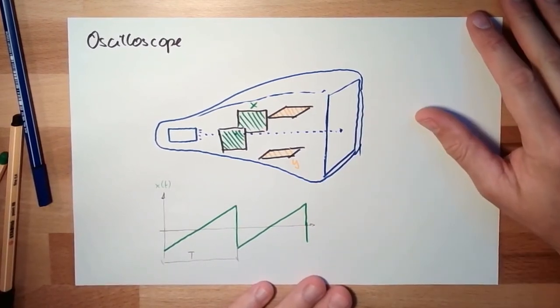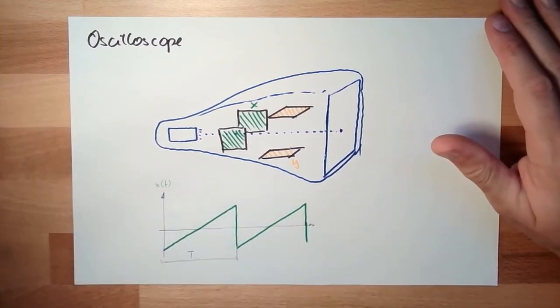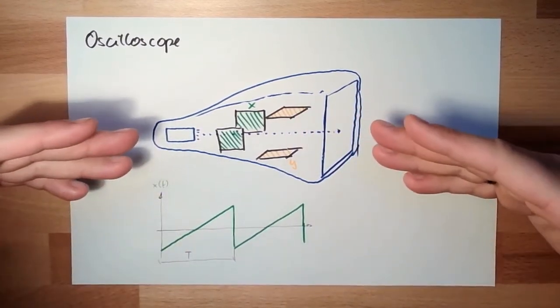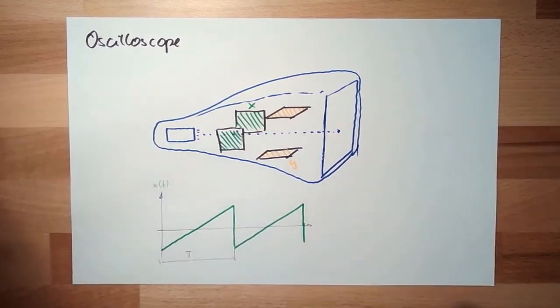This is how an oscilloscope was built. Pretty easy, or easy from the principle. There are still some parts like trigger events and so on.